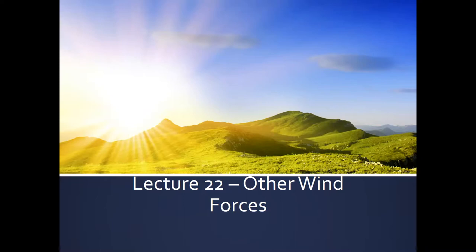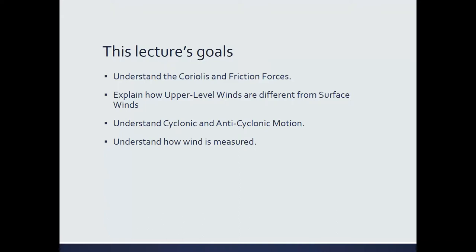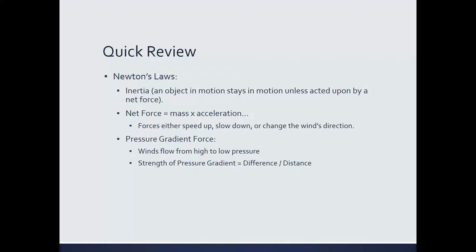The goals for this lecture are: first, to talk about the Coriolis and friction forces; then to talk about upper level winds compared to surface winds, and upper level maps versus surface maps; then cyclonic and anti-cyclonic motion and how this relates to high and low pressure systems; and finally how wind is measured. Let me give you a quick 30,000-foot flyover of what we've talked about so far.